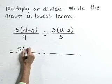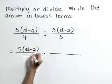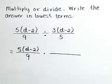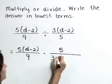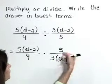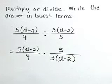So our first expression is 5 times d minus 2 over 9. Now our second one becomes 5 over 3 times d minus 2 as we flip that expression.